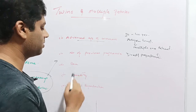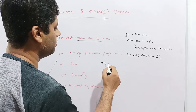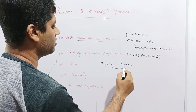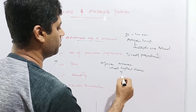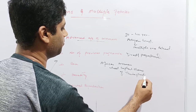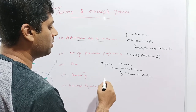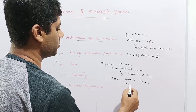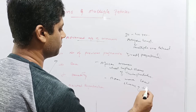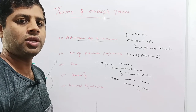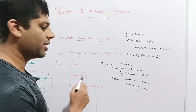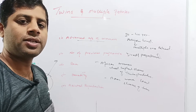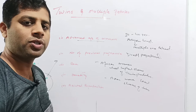The next factor for twin production is race. It has been observed that African women bear the highest chances of twin production, while Asian women have the least chances of twin production. These differences may be due to varying concentrations of estrogen levels in both races. The fourth factor is heredity or genetics — if the woman was herself a twin, or if her siblings, parents, or relatives produced twins, this will also increase the chances of twin production.